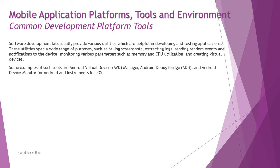Moving on to common development platform tools — software development kits, commonly called SDKs, usually provide various utilities helpful in developing and testing applications. These utilities span a wide range of purposes such as taking screenshots, extracting logs, and sending random events and notifications to the device. Until an app is published, other apps cannot send notifications, so SDKs let you create them in a simulated manner to test interruptions and other scenarios.